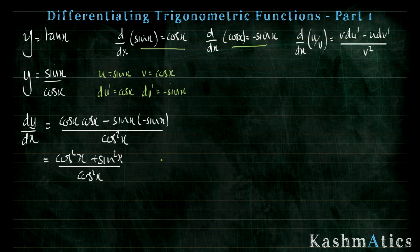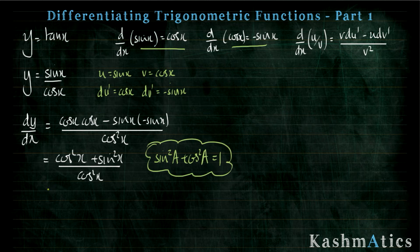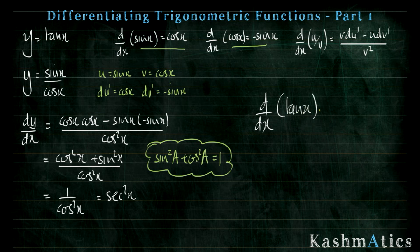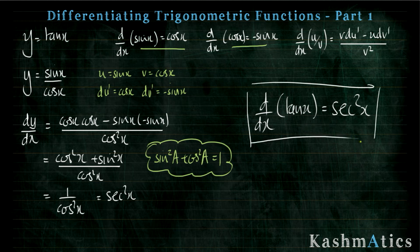Using the identity sin squared a plus cos squared a equals one, the numerator simplifies to just one, giving one over cos squared x. That equals sec squared x. Therefore d by dx of tan x is equal to sec squared x. So that's that derivative done — and I'm going to give you something very similar to try.